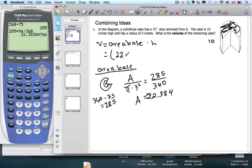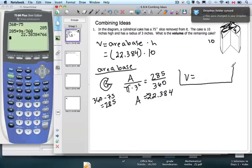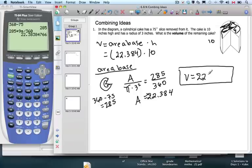So 22.384, and then we multiply it by the height. Times 10, that's easy. We move one decimal place over. So the volume is 223.84 inches cubed. Oh wait, we have to move the decimal place. Oh right, you're right, I'm sorry. 223.84 inches cubed.